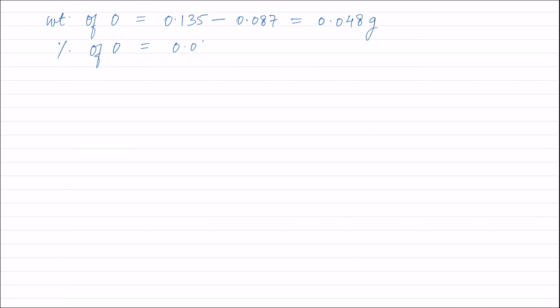Therefore, percentage of oxygen = (weight of oxygen / weight of organic compound) × 100 = (0.048 / 0.135) × 100 = 35.5 percent.